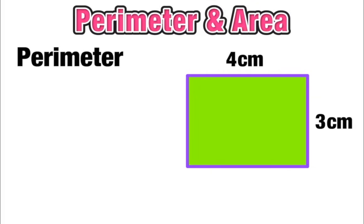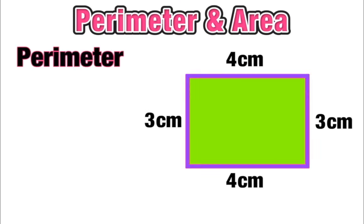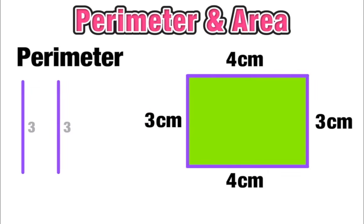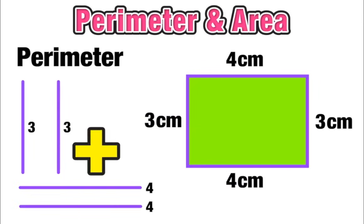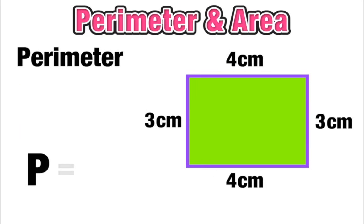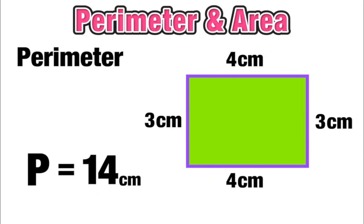Let's find the perimeter of a rectangle with a length of 4 centimeters and a height of 3 centimeters. Since opposite sides in a rectangle are the same length, I'll label those. We can visualize taking the two widths — both 3 centimeters — and the two lengths — both 4 centimeters — and adding them all together: 3 plus 3 plus 4 plus 4 gives us a perimeter of 14 centimeters.